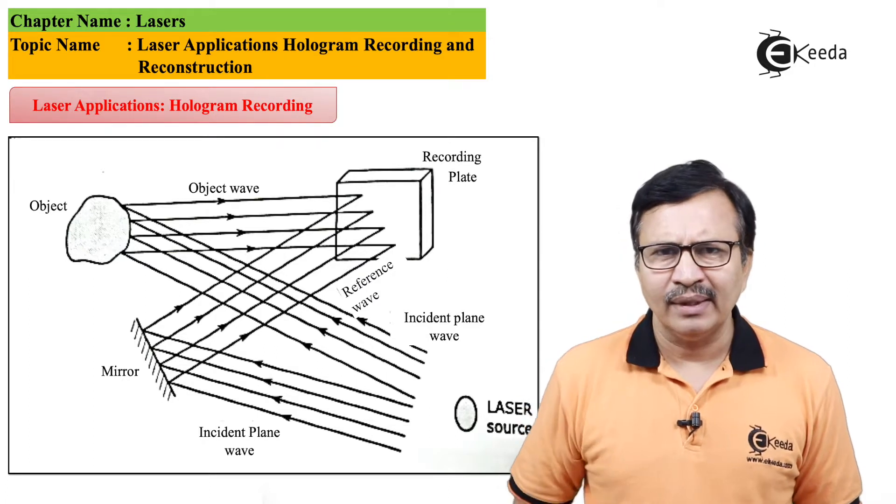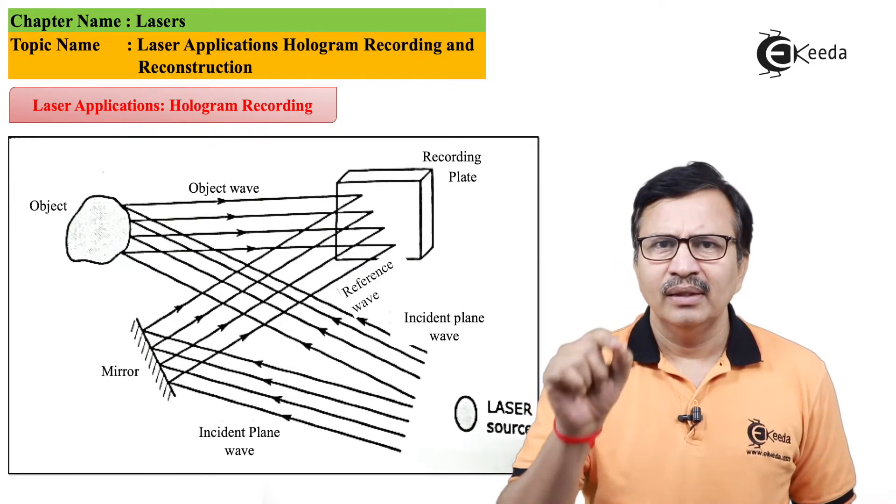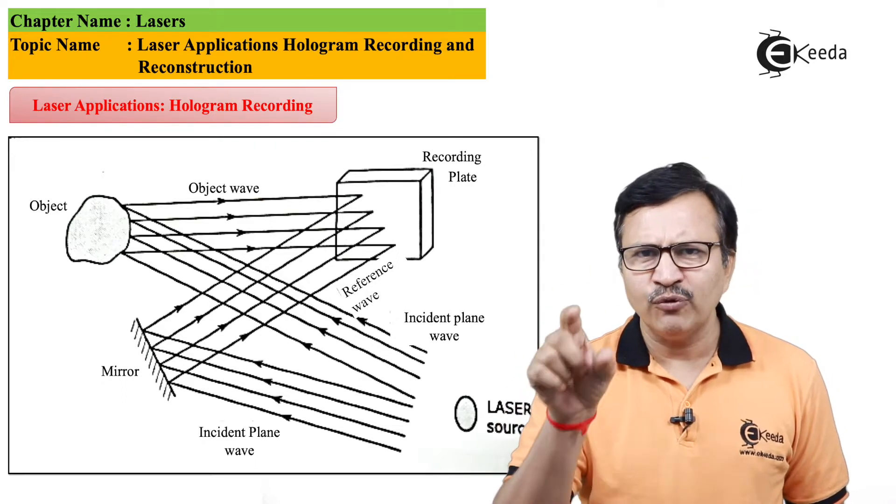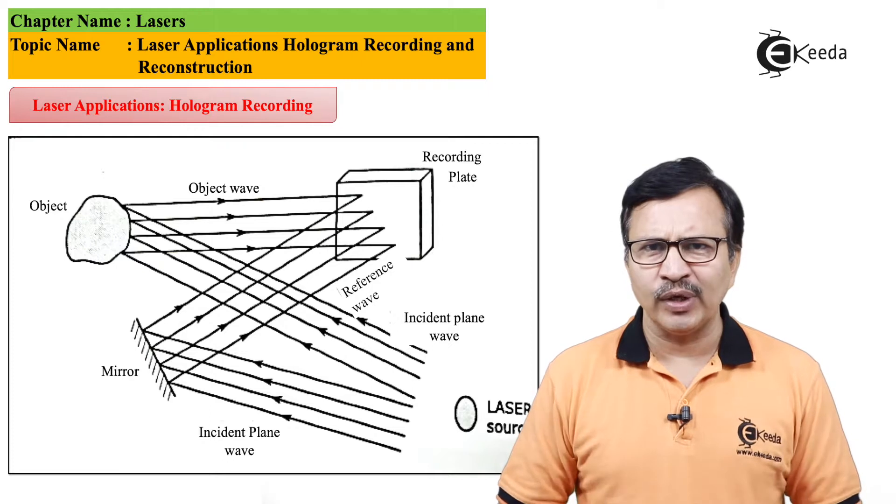So the reflected beam from the mirror, which is basically the reference beam, will be incident on a photographic plate and simultaneously the object wave will also be incident on the same photographic plate.